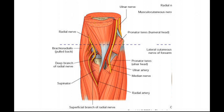This one right here is the motor part — this is the deep branch of the radial nerve. This one, if we follow it, is the superficial branch of the radial nerve, and this one is purely sensory.